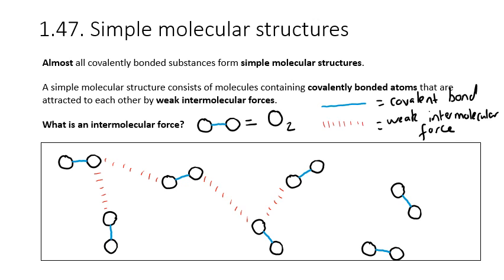These molecules can be attracted to any and all of the others, not necessarily in the pattern I'm drawing. The key point is that when we melt or boil a simple molecular structure, we do not break covalent bonds. What we do is overcome weak intermolecular forces, and because they're weak, this leads to low melting and boiling points.